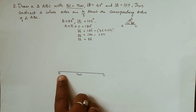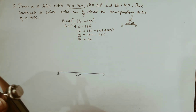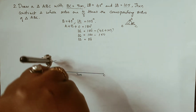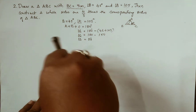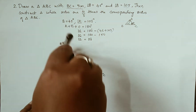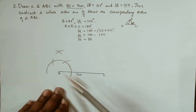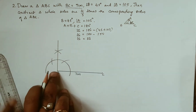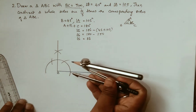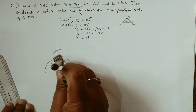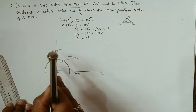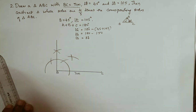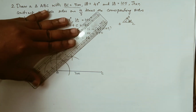Next, angle B is equal to 45°. Take out your compass and construct 45°. First you need to construct 90°. Now here it is 90°. Now you need to bisect this 90°. When you want to bisect it, you can take more than half of it, draw an arc on both sides, and construct 45° here.